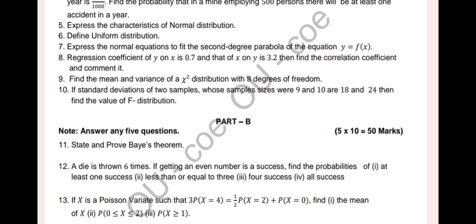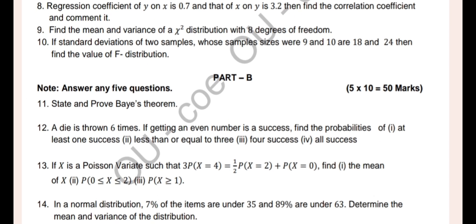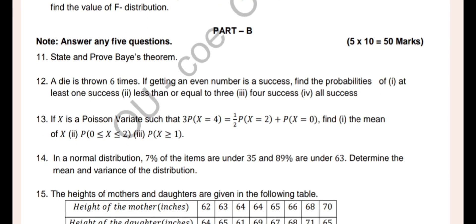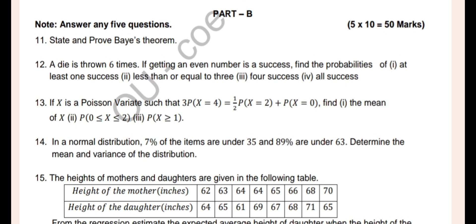Then question 11 A bit is state and prove Bayes theorem — directly 10 marks. Question 12 A bit is: a die is thrown 6 times, you can use binomial or Poisson distribution — see how simple it is for a 10-mark question. Question 13 A bit is Poisson distribution: find the mean, then find the probability between 0 and 2, and greater than or equal to 1. Question 14 is normal distribution — a direct problem.